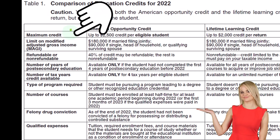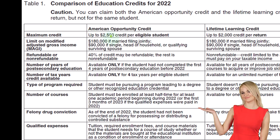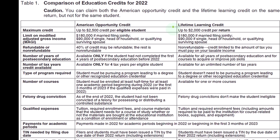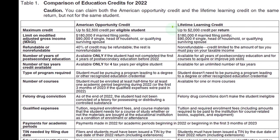Maximum credit: the American Opportunity Credit offers up to $2,500 credit per eligible student, whereas the Lifetime Learning Credit offers up to $2,000 credit per return — a significant difference, per student versus per return. For the limit on modified adjusted gross income, the phase-out is $180,000 for the American Opportunity Credit if married filing jointly, and $90,000 if single, head of household, or qualifying surviving spouse. The Lifetime Learning Credit has the same limits: $180,000 married filing joint, $90,000 if single or head of household.